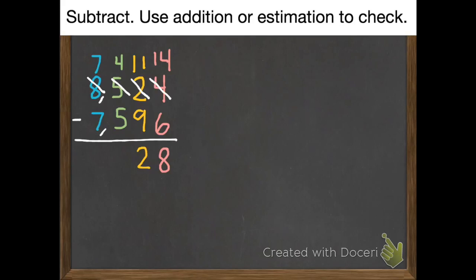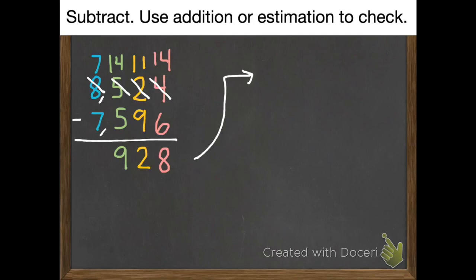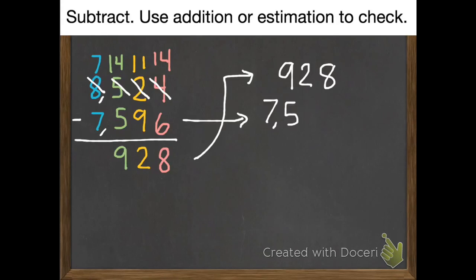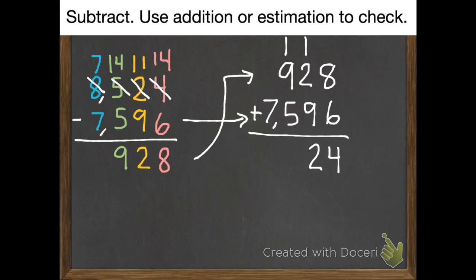We borrow for the hundreds: we get 10 more hundreds, we already have 4, so we have 14. 14 subtract 5 is 9. Then 7,000 subtract 7,000 is 0 — we don't really need to write that 0 down. So 928 is our difference. To check, I put 928 on top and add 7,596: 8 plus 6 is 14, 1 plus 2 plus 9 is 12, 1 plus 9 plus 5 is 15, 1 plus 7 is 8.